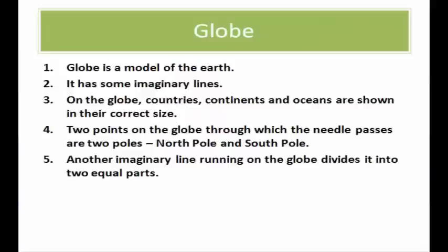The first topic is the globe. A globe is a true model of the earth — it's a miniature form. You must have seen it in your classroom. Globes are of different sizes and types, some big and some small. Globes are not fixed; they can be rotated. On the globe you will find countries, continents, and oceans in their correct size.